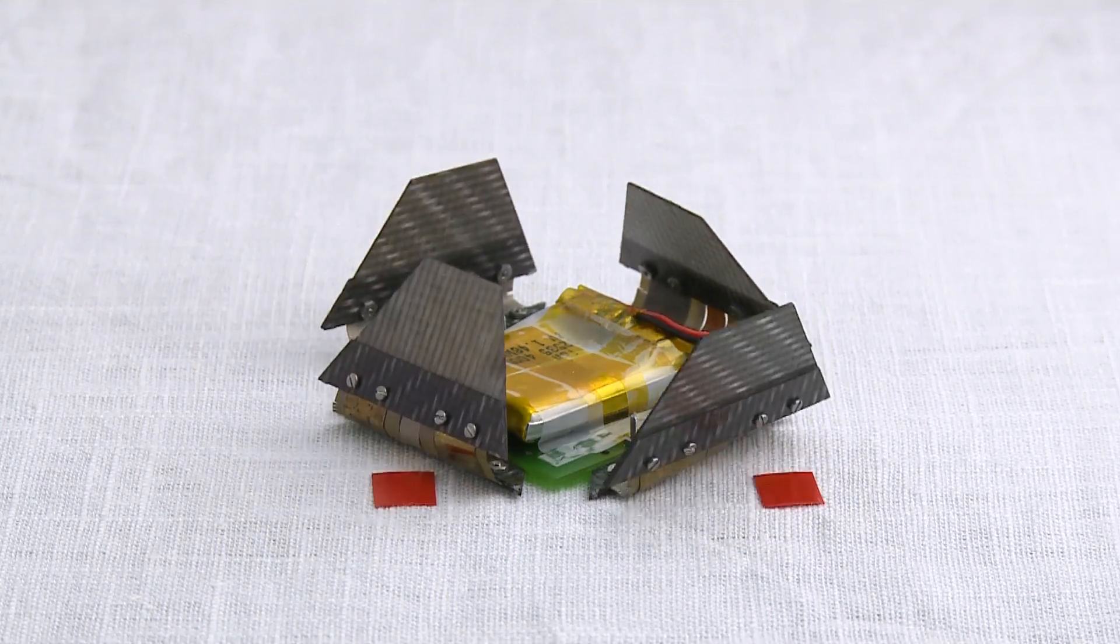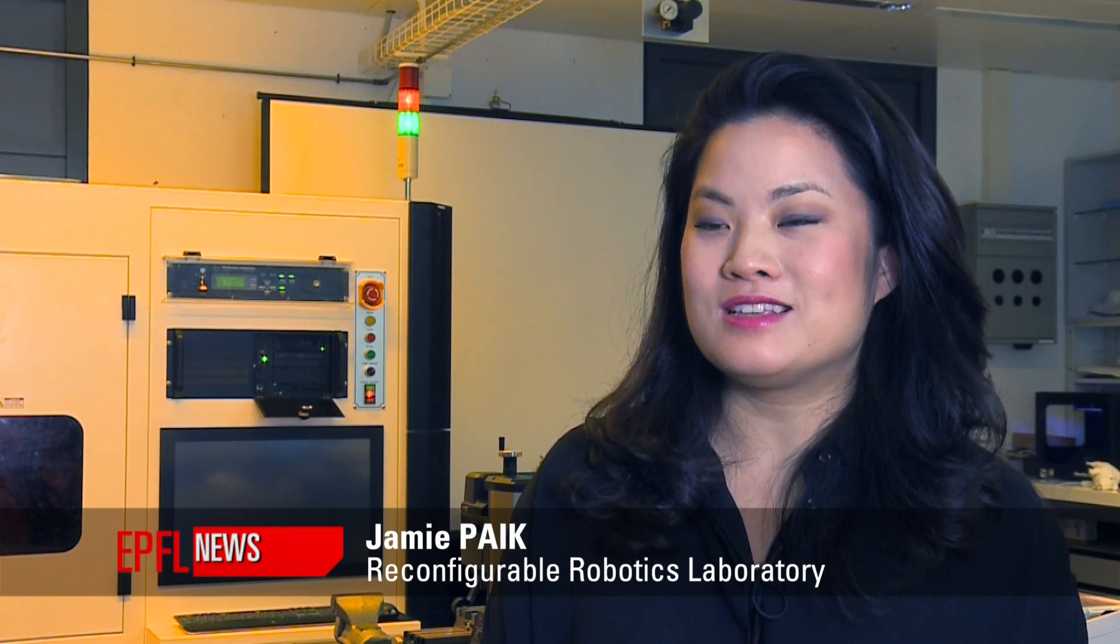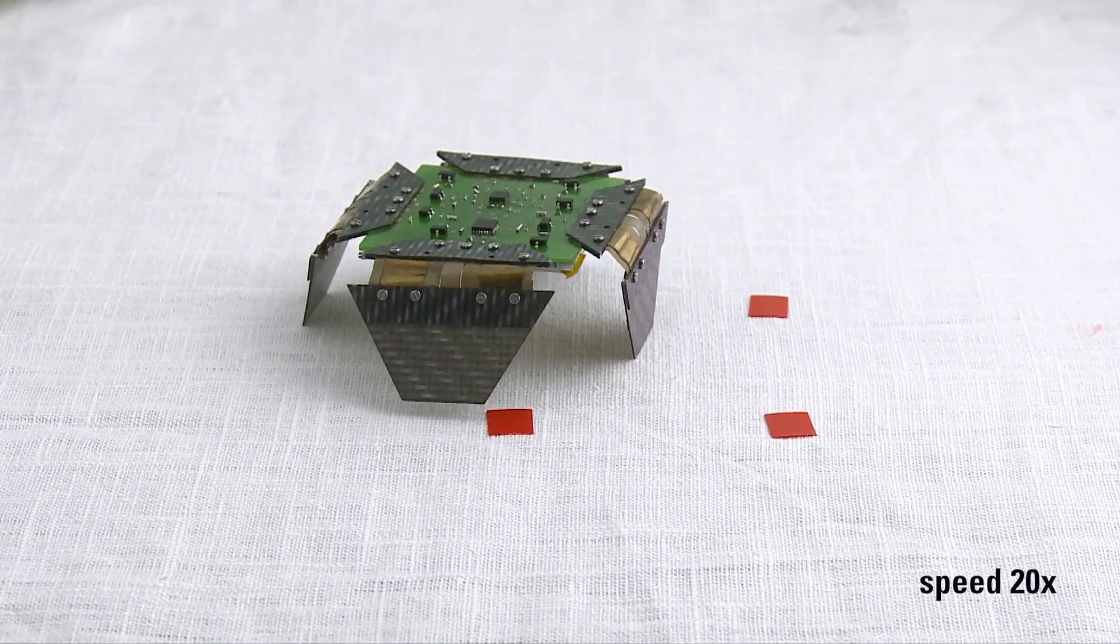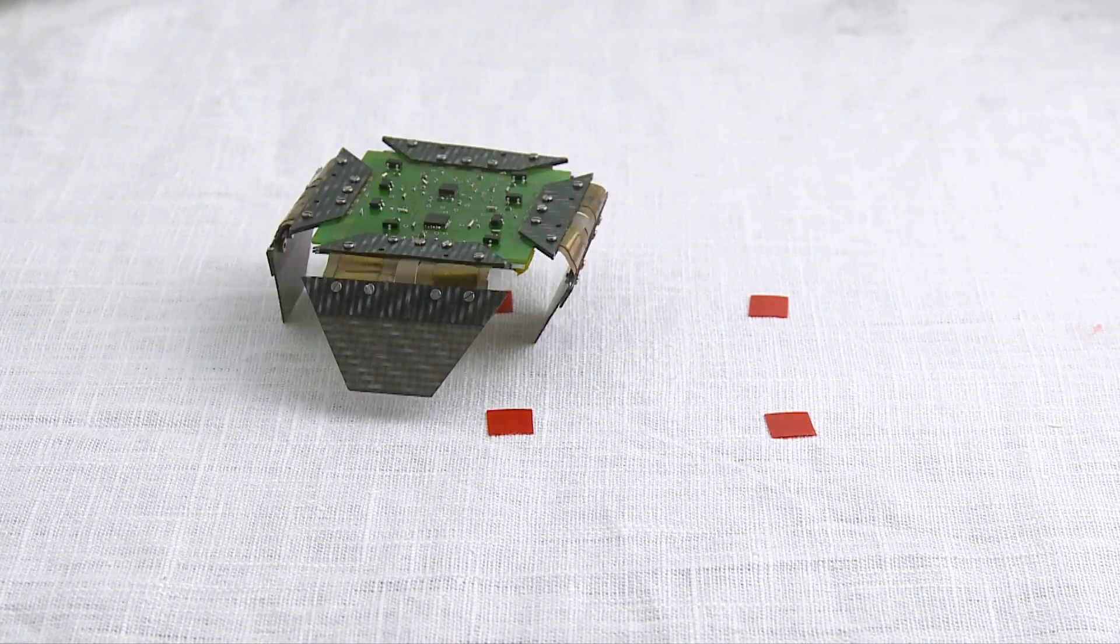We get inspiration for our robots from origami. Unlike other robots that need to have a fixed task and form at the time of design and fabrication, I want my robots to be like origami, which is very versatile with its form. And for robots it will be versatile with its actions, which means its tasks.